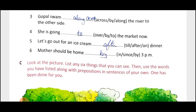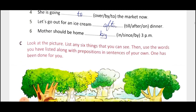Next: Let's go out for an ice cream after dinner — till dinner we can't go; on dinner doesn't make sense; so after dinner, we will go for ice cream. Next: Mother should be home by 3 pm — approximately by 3 pm, last time being 3 pm — 'since' is used for beginning time, not last time. 'By' is used to tell the ending time. So when we are telling the last time by which the action will be complete, we use 'by'.